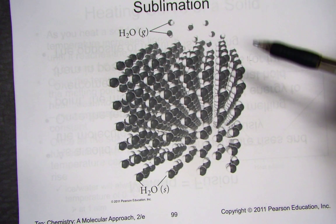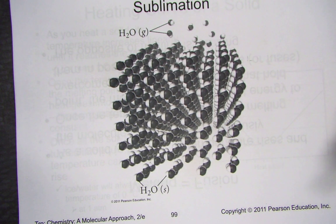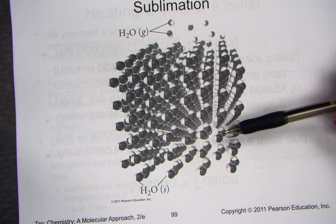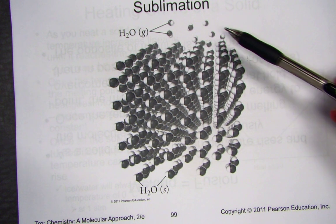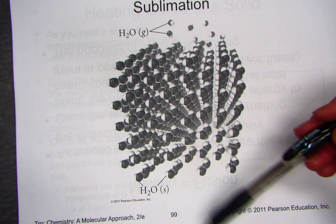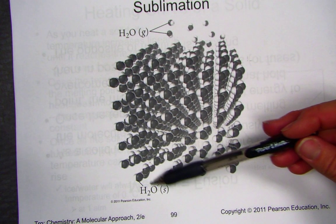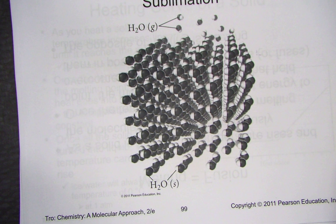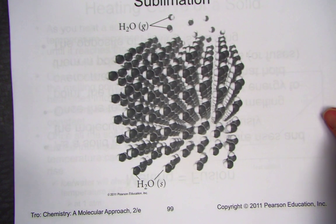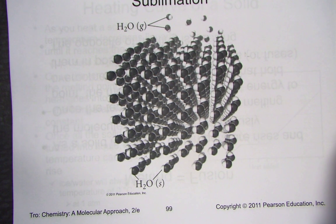Skipping the liquid phase, you could have solid water going directly to gaseous water — that would be a process of sublimation. For water, this would have to happen at extremely high pressures.